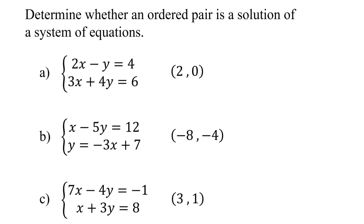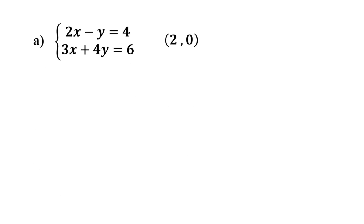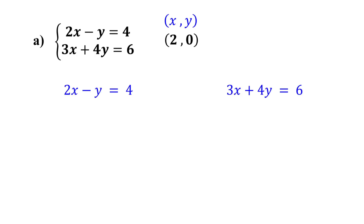Let's take a look at each exercise one by one. Is the ordered pair (2, 0) a solution to this system of equations? The first number of the ordered pair is the x value and the second number is the y value. Our first step is to substitute x with 2 and y with 0 into both equations.